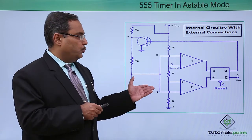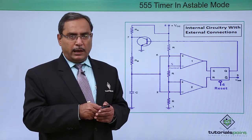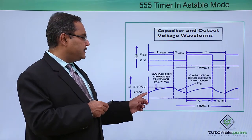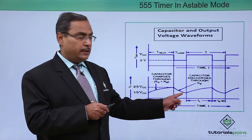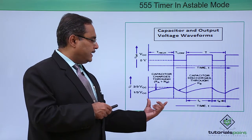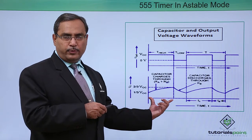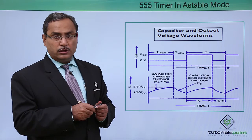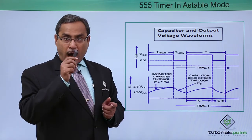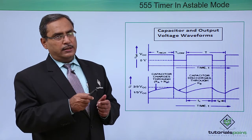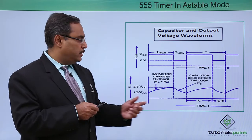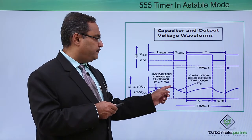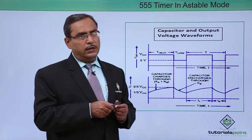When the capacitor discharges through the discharging transistor, the path has only RB. So the charging time is larger than the discharging time because the charging current passes through RA plus RB while the discharging current passes through only RB. This is the respective charging and discharging graph for the capacitor.